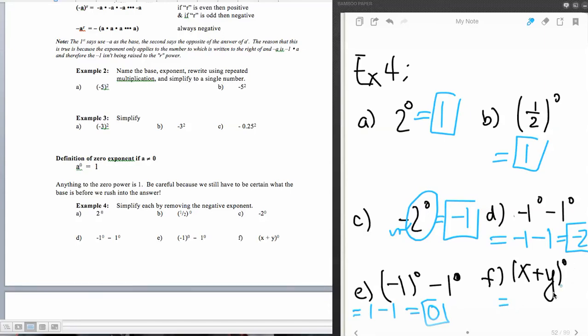And then part F, anything to the zero power is always one. Doesn't matter what's in here, right? X could be 2,500,000 plus 0.0002, and that number raised to the zero power is still going to be one. It doesn't matter what X and Y are. Whenever you add them, they're going to be a number, and any number to zero power is always going to be one.